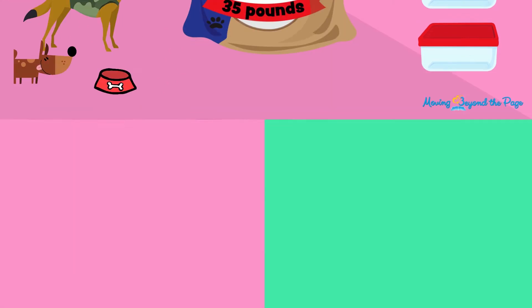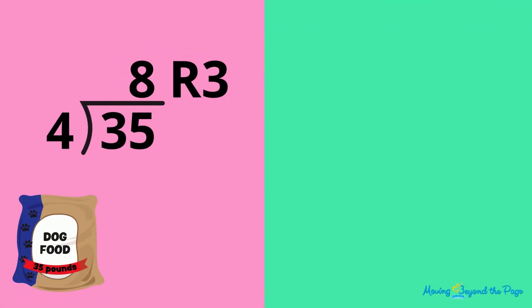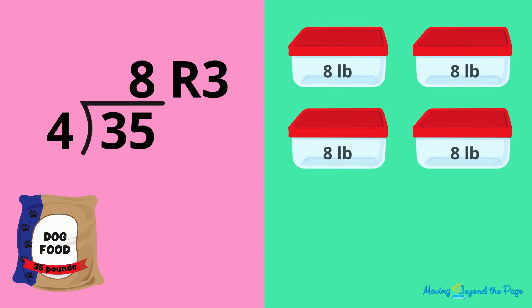You know that 35 divided by 4 is 8 remainder 3, so you know to put 8 pounds into each container. But then what do you do with the remaining 3 pounds?